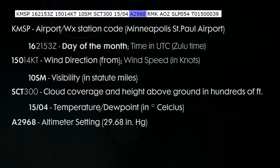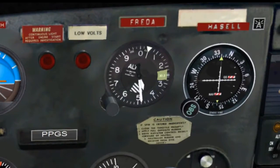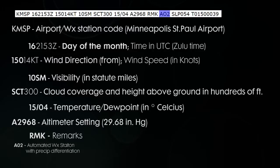The next part is the altimeter setting. When you go fly, you'll set this into what we call the Kollsman window on your altimeter in the airplane. So 29.68 is what you would set in there. The very last part is the remarks section. This is not necessarily pertinent information, but it's things that could be useful to know. AO2 means that it's an automated station, and the O2 means that it can tell the difference between precipitation types, like snow, rain, etc.